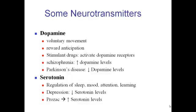Dopamine is a very important neurotransmitter. It's involved in motor movement and reward anticipation — when we're seeking out things we want, dopamine is active and pushing us toward them. Stimulant drugs like caffeine and cocaine activate the dopamine receptors; cocaine specifically blocks the reuptake of dopamine. People with schizophrenia have higher than normal levels of dopamine, while people with Parkinson's disease have lower levels, leading to problems with voluntary movement.